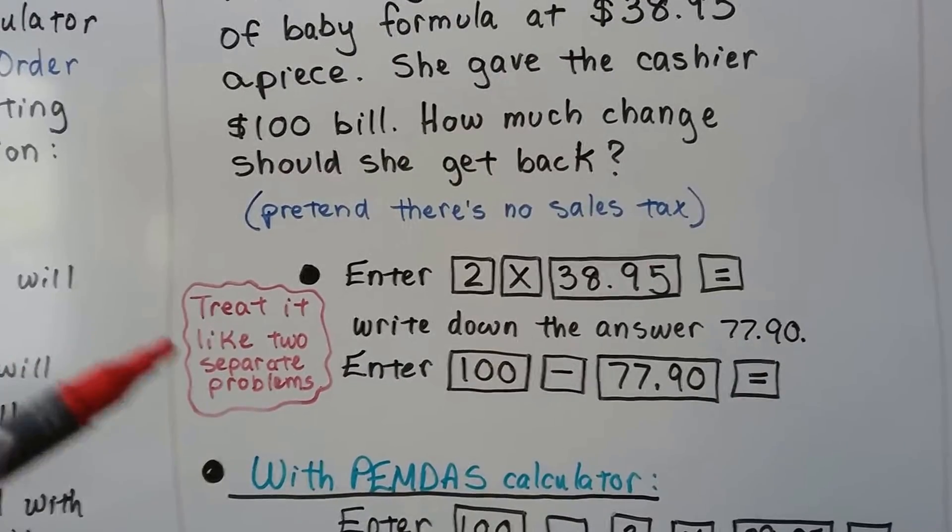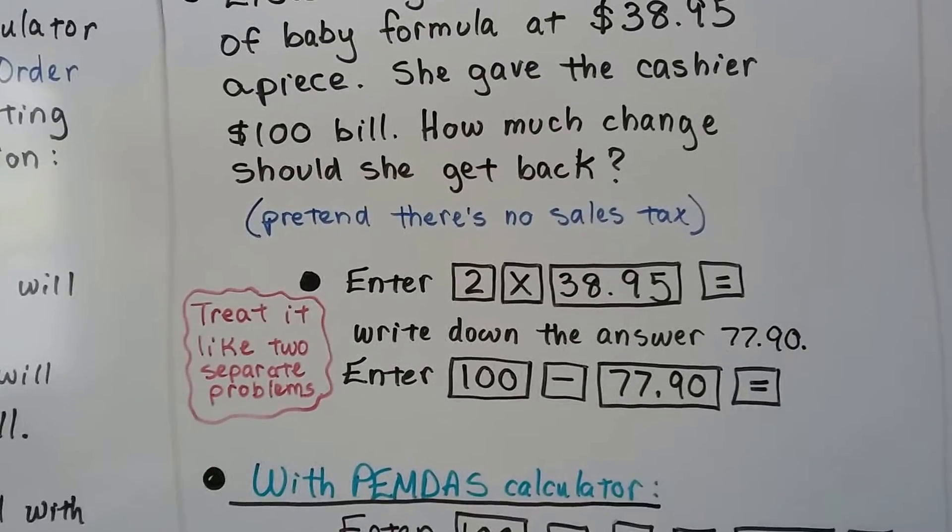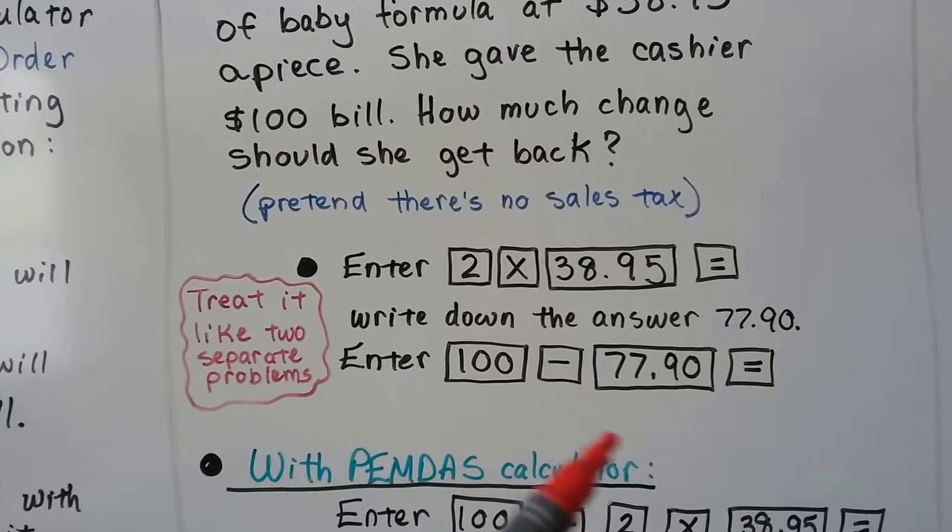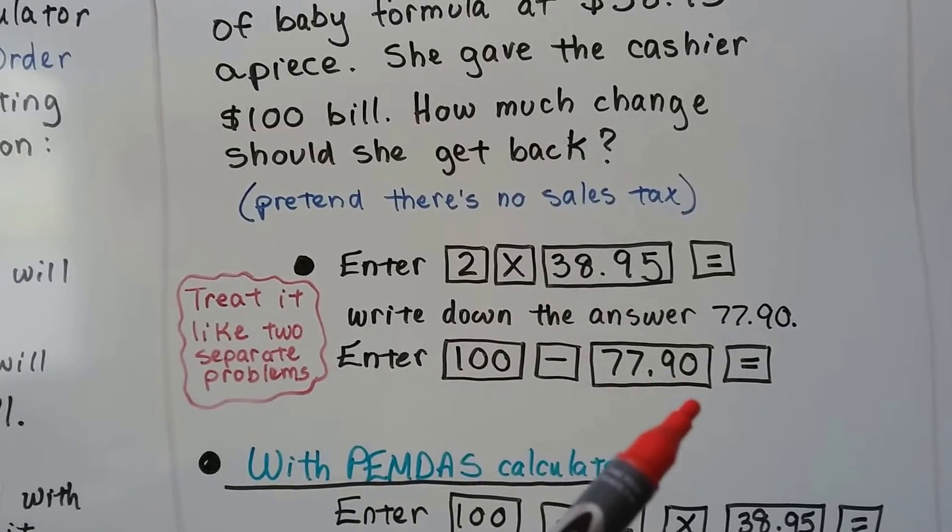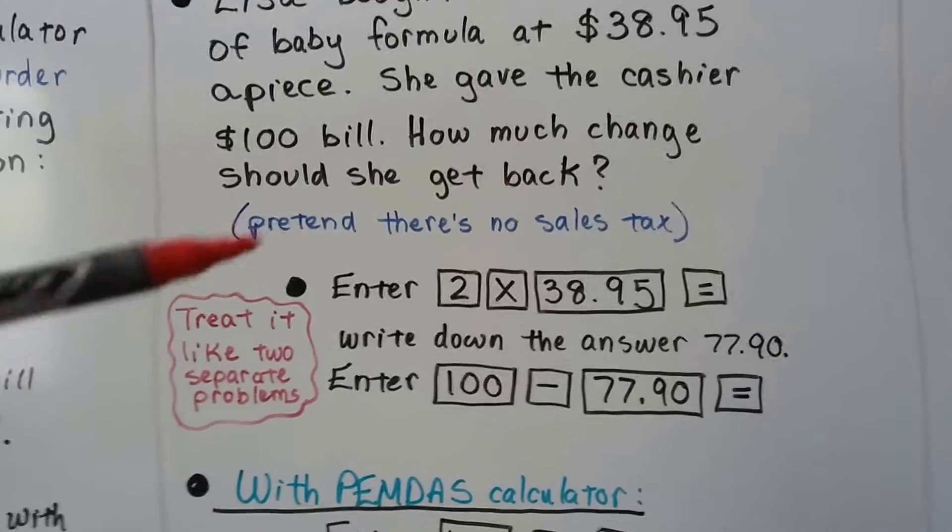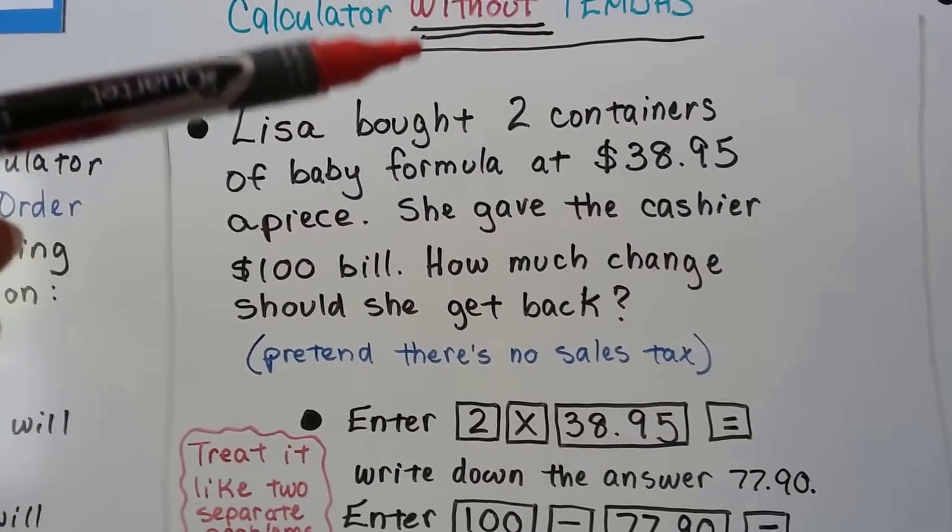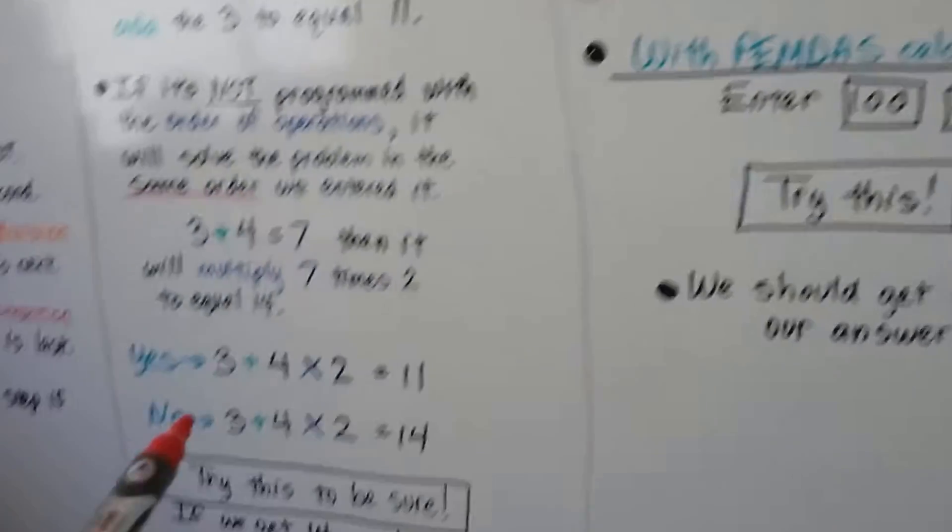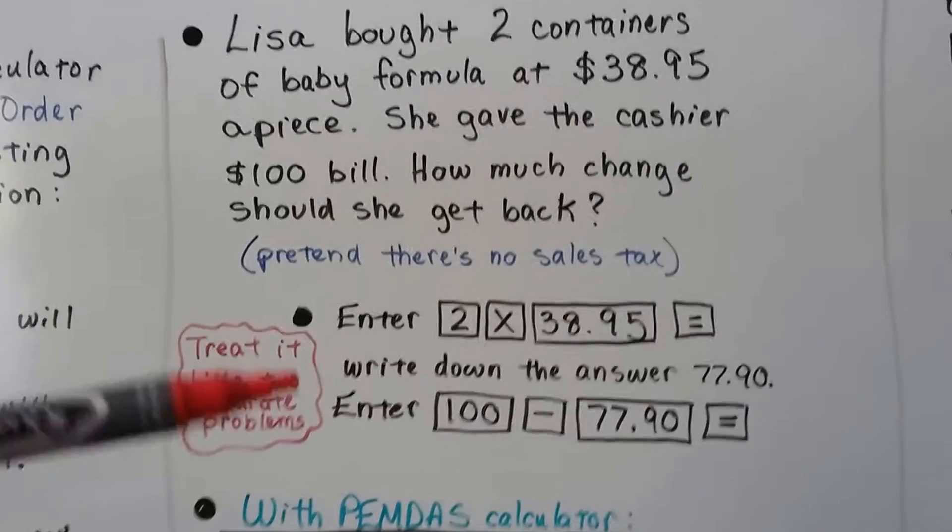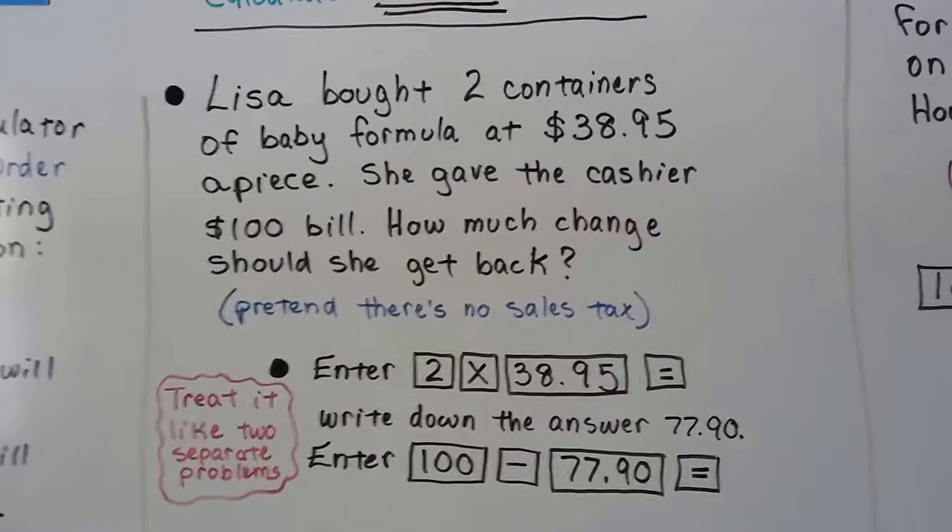Now, we're going to treat this like 2 separate problems. Now, we're going to clear it, put in 100, and hit minus the 77.90, and it's going to give us the answer. So, if your calculator does not have the PEMDAS function and you tested it and got a 14 for this, then you have to treat it like it's 2 separate problems.